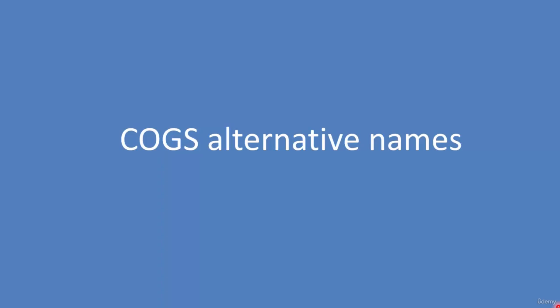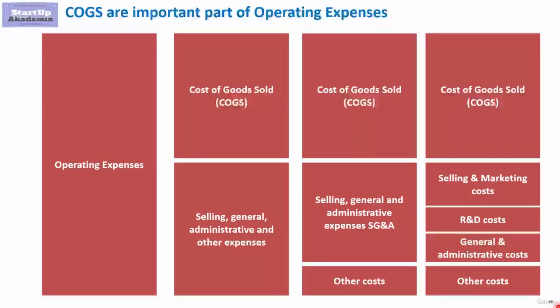COGS alternative names. As always, I will go through certain alternative names that you might find in the profit and loss statements or annual reports of firms, so you are aware that this is actually the very same category. Just as a reminder, operating expenses are usually divided into cost of goods sold and other costs. In short, cost of goods sold are simply all the costs related to producing or delivering the service or product we are selling.